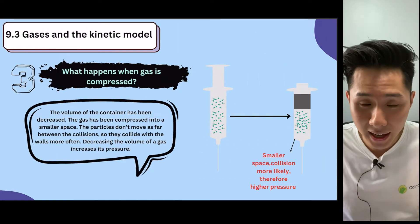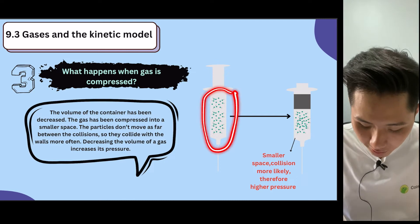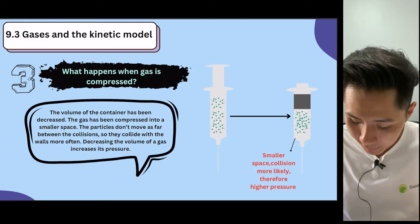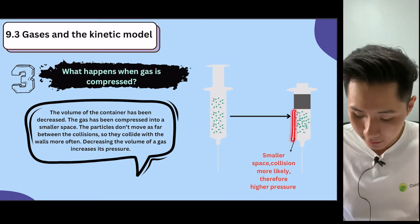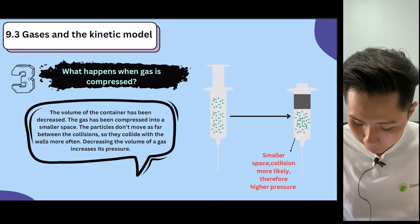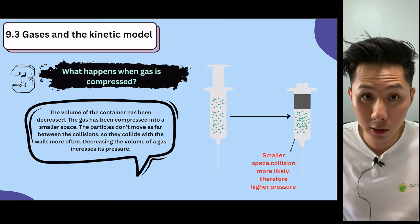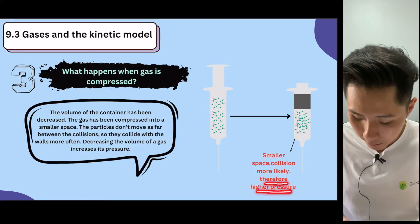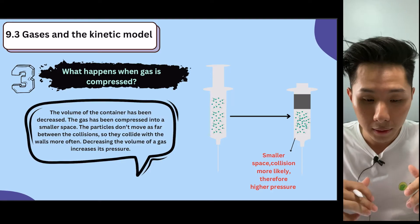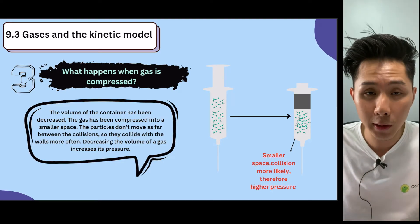Third question: what happens when gas is compressed? Initially, the gas particles are like that. But as it is compressed, you can see that the air particles actually exist in a smaller space now. And because of the smaller space, now collision is more likely to occur, therefore resulting in higher pressure. So that's what happens when we do different things to gas.